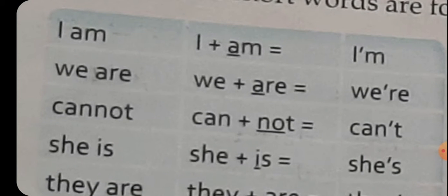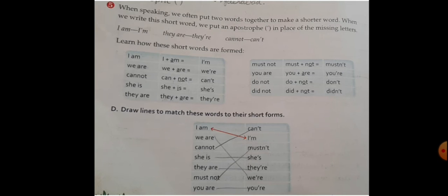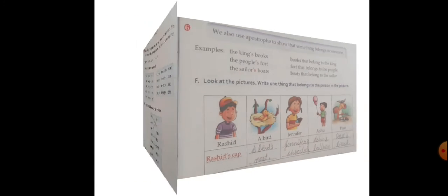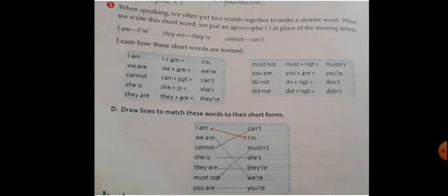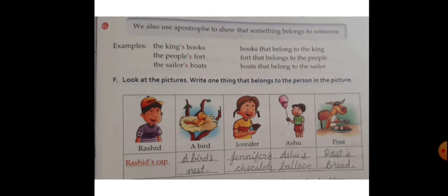देखो: I am = I + am, तो a को cut करके I'am — I'm। Exercise: draw lines to match these words to their short form: I am, we are, cannot → can't, she is, they are, must not, you are → mustn't, you're। We also use apostrophe to show that something belongs to someone — किसी चीज़ का किसी से belong करना दिखाने के लिए भी apostrophe s लगाते हैं।